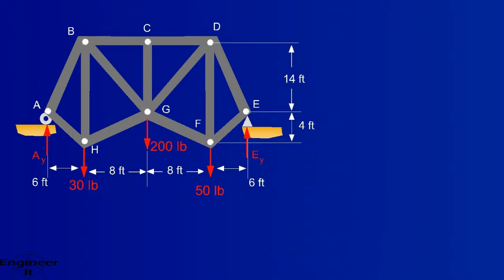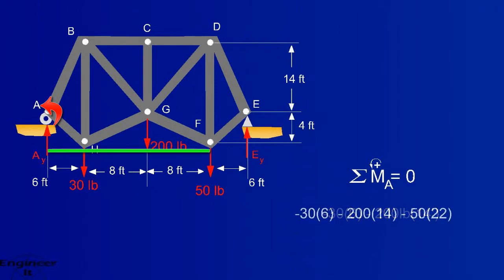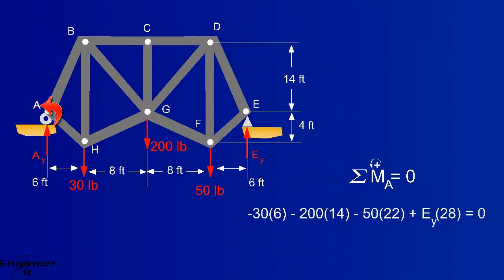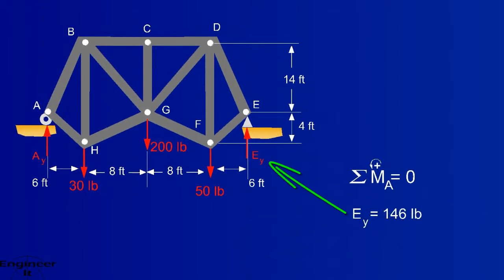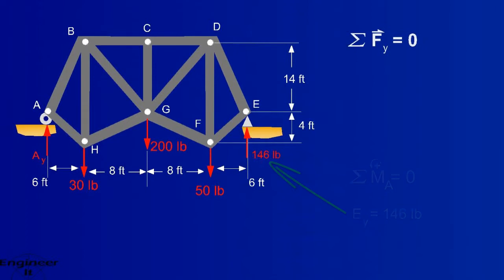The first thing to do in truss is always solve for external forces by summing moments about a point. Summing moments about point A will create an equation that looks like the following. Point E will have a reaction of 146 pounds. Now summing forces in the y direction will find point A's reaction.